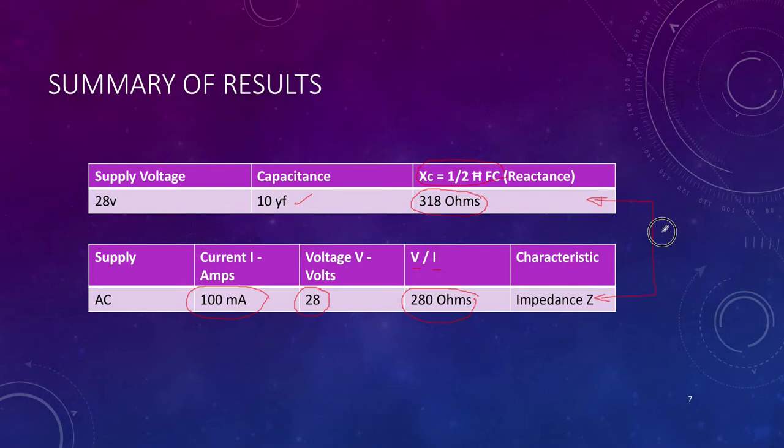But 318 ohms is close to 300 and 280 is close to 300. So approximately 300 ohms for the circuit. Our calculated reactance and our measured impedance are very, very similar.